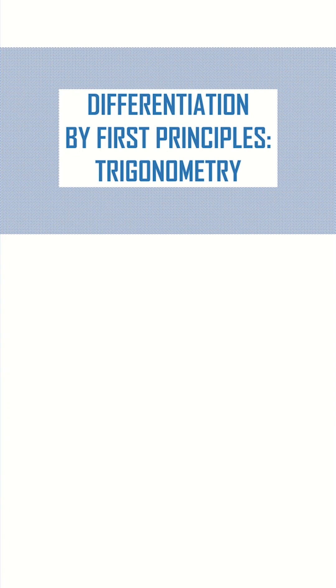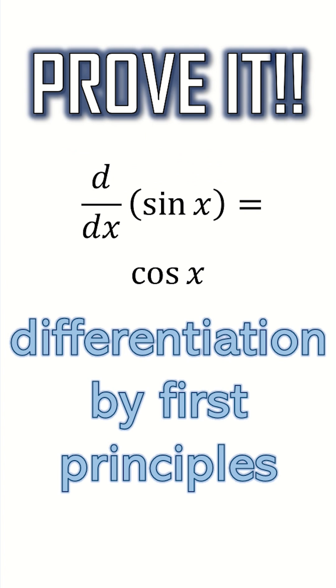In a previous tutorial video, I already showed you how to prove that the derivative of cos of x is equal to minus sine of x. So today I thought, stuff it, let's prove that the derivative of sine of x is also equal to cos of x, using differentiation by first principles.